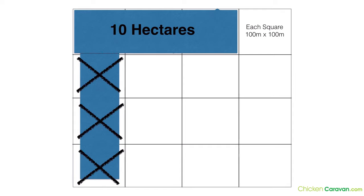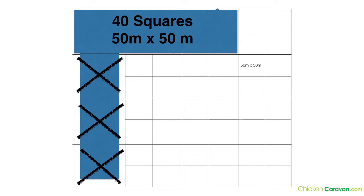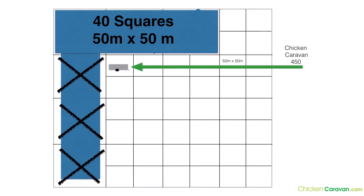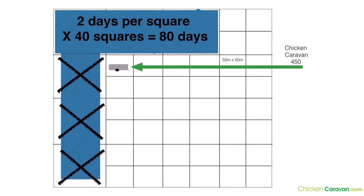Now we're going to cut up those squares with 50 by 50 metre divisions — we've got 40 squares. These 50 by 50 metre squares can represent chicken fences; one chicken fence is 50 metres long. In the example, we've got one chicken caravan with 450 hens in one of the squares. If we leave it there for two days, two days per square times 40 squares equals 80 days — we've just worked out your rotation.